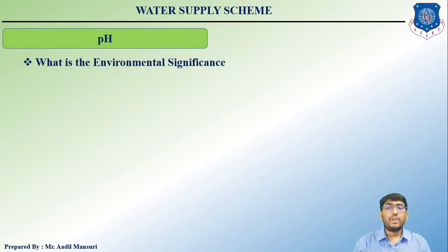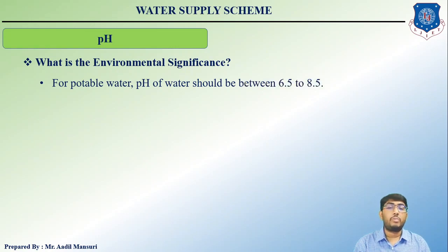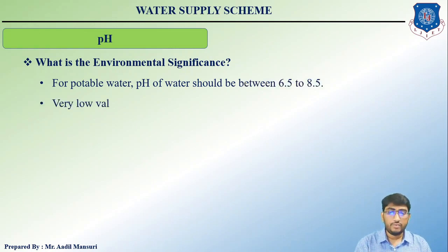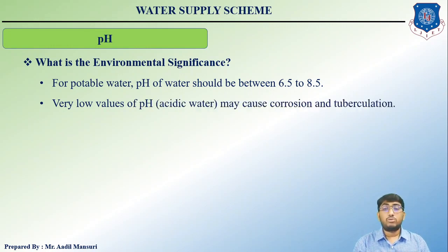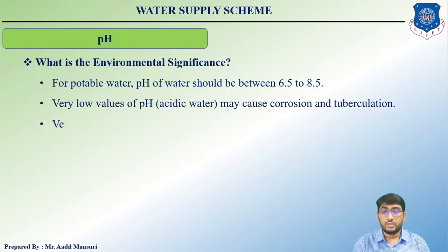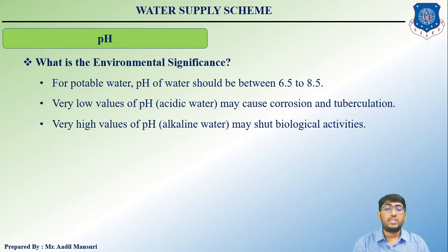Regarding environmental significance of pH: for potable water, pH should be between 6.5 and 8.5. Very low pH causes corrosion or tuberculation, and a very high (alkaline) pH may hinder biological activities.